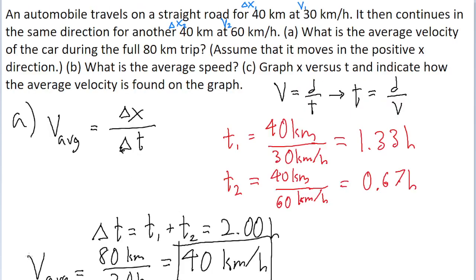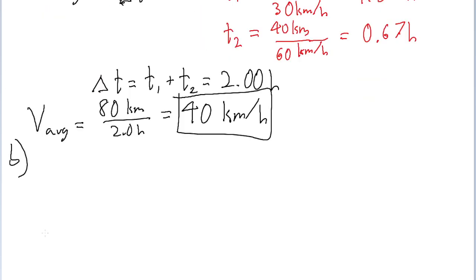Part B of the problem asks us to find the average speed. It's important to understand that the only real difference between speed and velocity is that while speed just represents motion and how fast an object is moving during its journey,